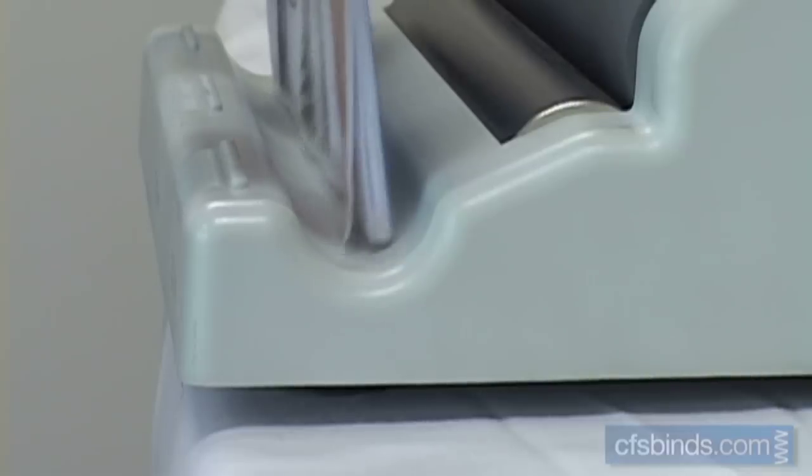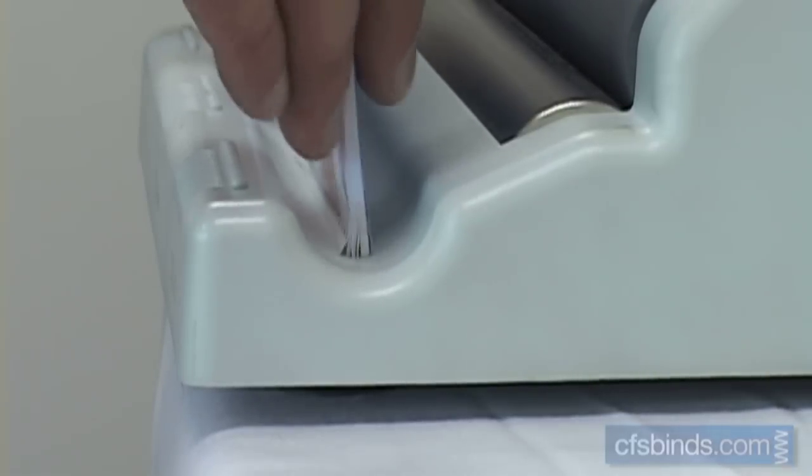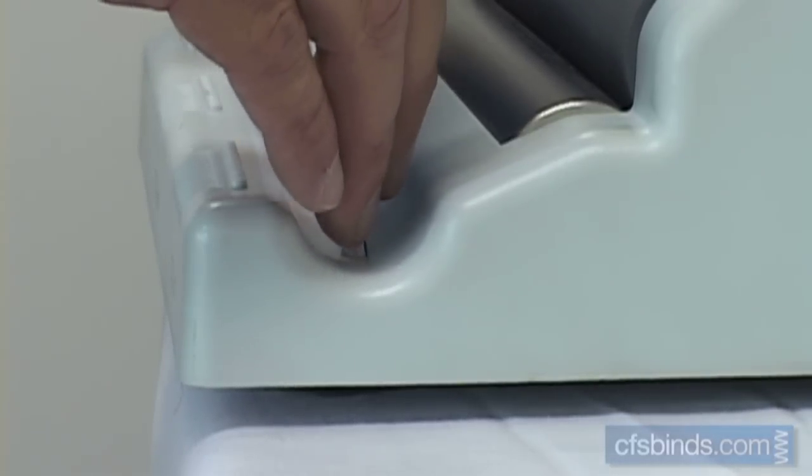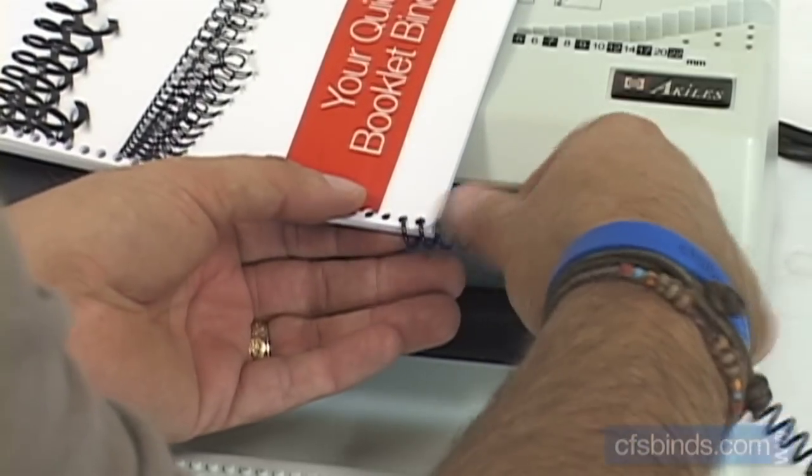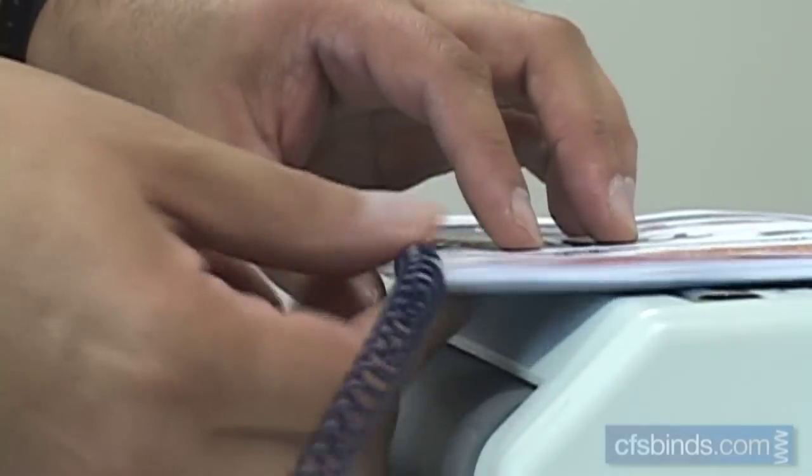Jogging the punched edge in the curved spine forming channel helps allow easy inserting, especially for larger diameter coils. With the binding edge facing you, start the coil by hand, spinning it into the first few holes on the right edge.